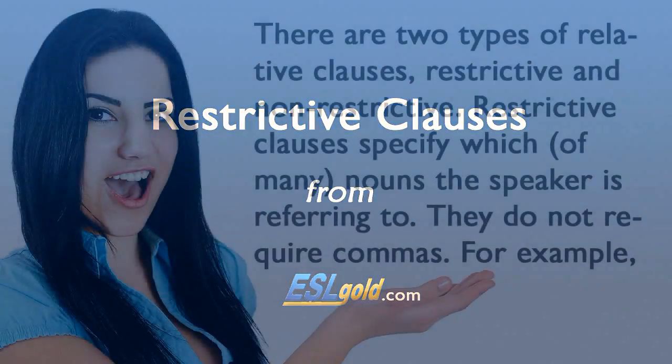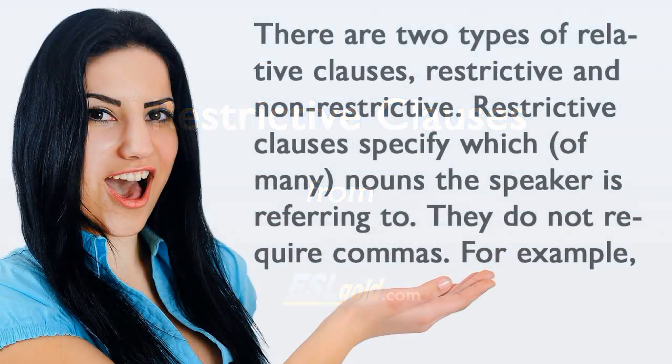Restrictive Clauses. There are two types of relative clauses: restrictive and non-restrictive. Restrictive clauses specify which of many nouns the speaker is referring to. They do not require commas.